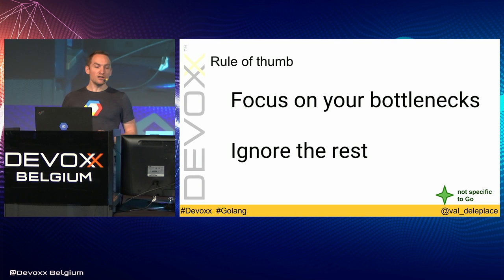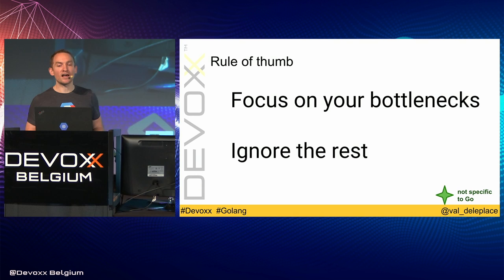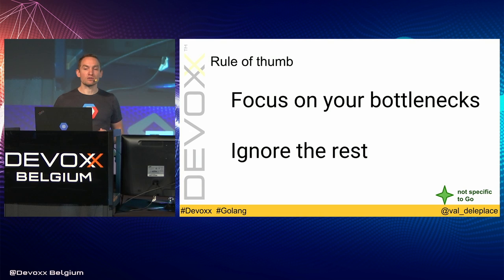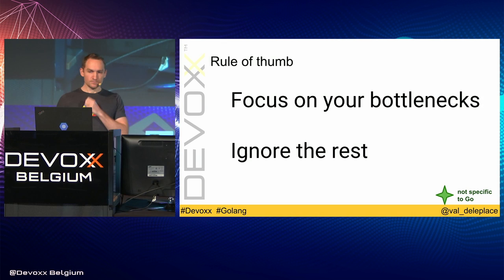A rule of thumb — and this is my main advice today — focus on your bottlenecks and ignore the rest. Usually you already have a software system, you already know it's too slow, and you've already decided to work on making it faster. The most valuable method is: find the bottleneck by measuring, fix it, and repeat.